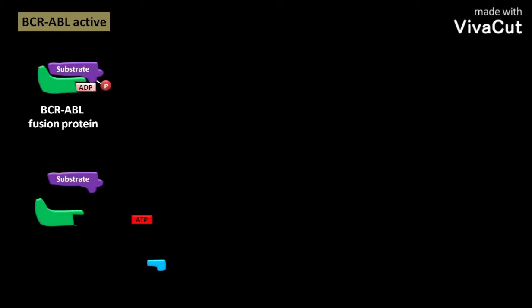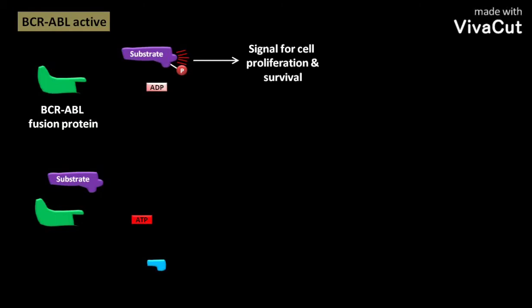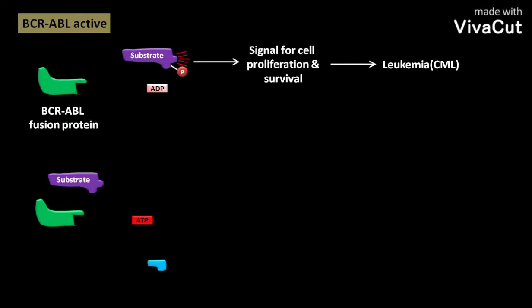This phosphate group is added to the substrate — a process called phosphorylation. Due to this phosphorylation, the substrate becomes active. The activated substrate and ADP then leave the BCR-ABL fusion protein. The activated substrate transmits a signal for cell proliferation and survival, resulting in leukemia like CML.